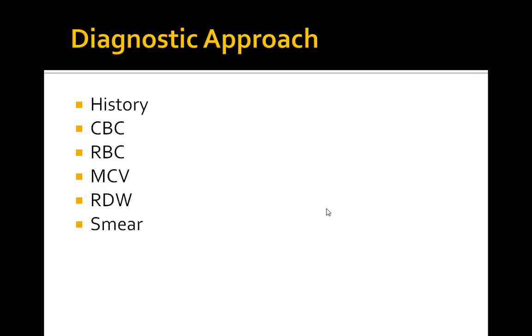When ordering lab studies, it's important to have a structured approach so you don't over-order. Key studies include the CBC and RBC parameters including reticulocyte count, MCV, and RDW.